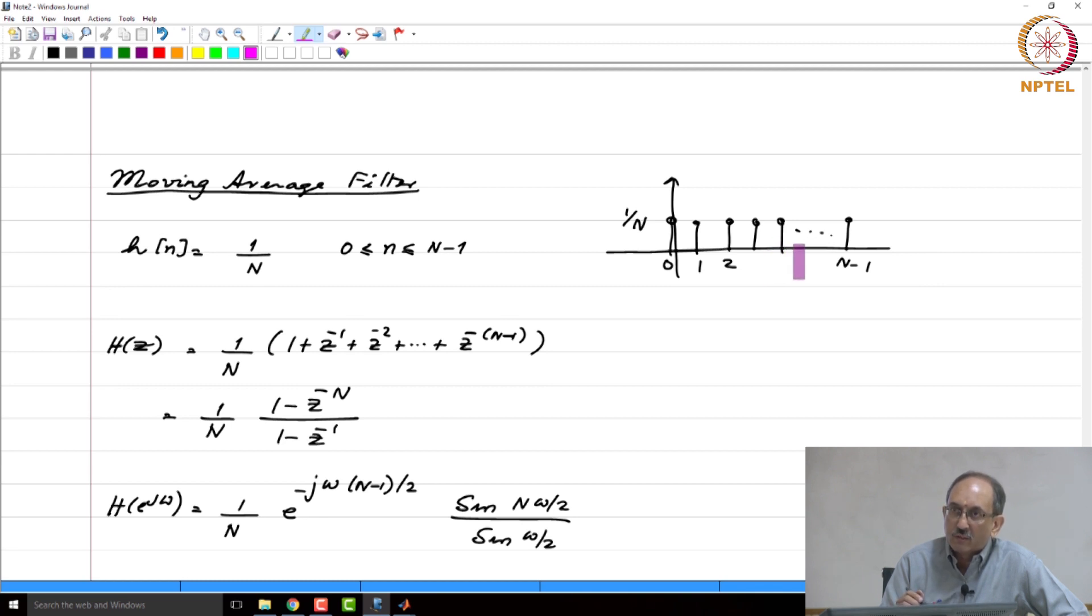So that is why this is called as a moving average filter, and we have seen this frequency response also before. So you have, for the case of n equal to 8, you have this, and then you have a pole 0 cancellation here. Remember, the pole at z equal to 1 cancels the 0 at z equal to 1, and the pole 0 plot I have plotted is for n equals 8.